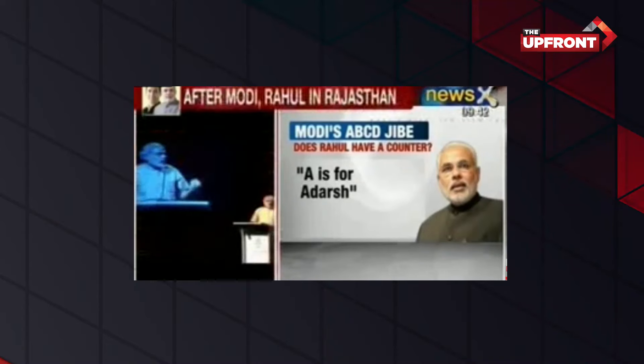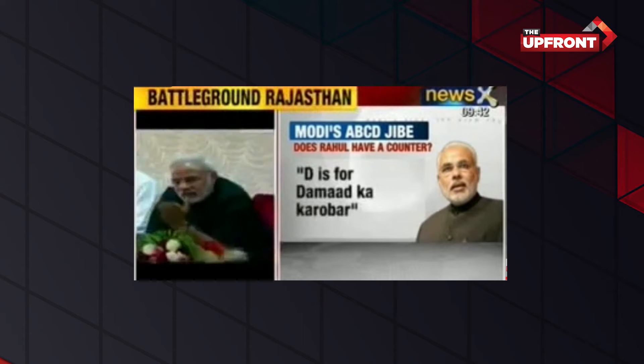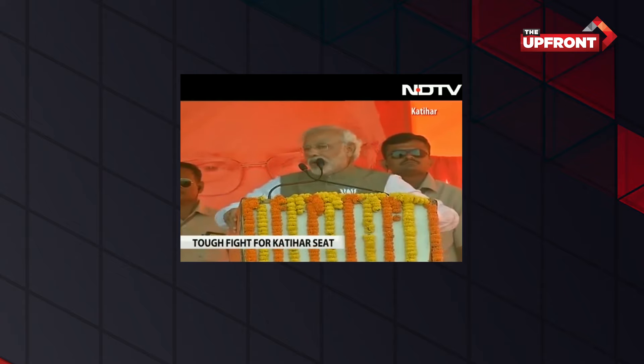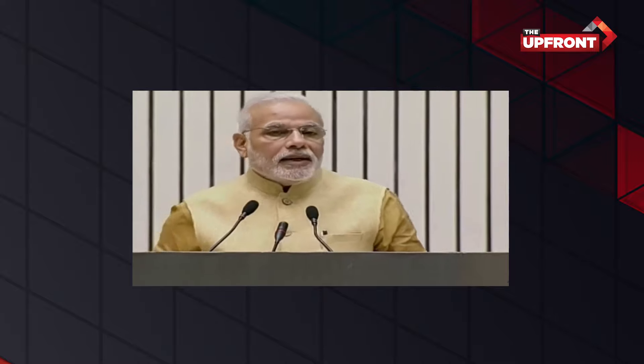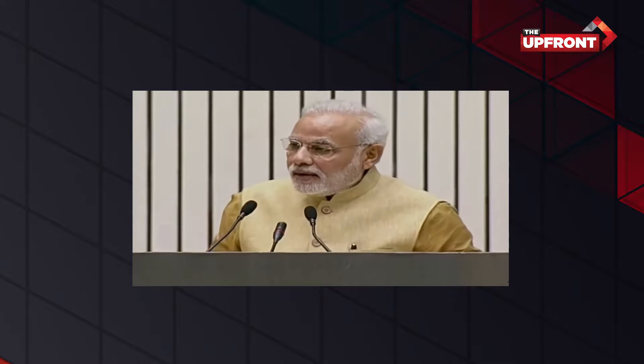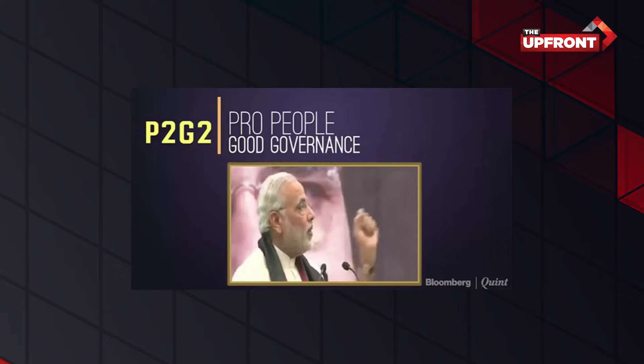A for Adarsh, B for Bofors, C for Commonwealth Games. The Congress ABCD — Rahul, Sonia, Priyanka, Batra. FDI — Bharatiyon ke liye hai. FDI: First Developed India. P2G2 — Pro People, Good Governance — and many many more.